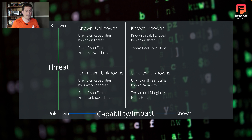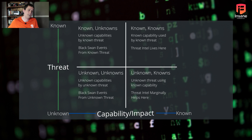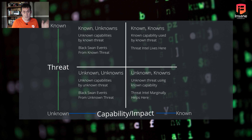Finally, unknown unknowns — unknown capabilities by unknown threats. This is a really hard one. This is one you luck into maybe by doing different analysis techniques. It's a category you're unlikely to find during a threat hunt, or that you find entirely by luck. Today, we're going to talk about black swan events. Black swan events exist when it's not a known known — it's in the margin of what we don't know that we're looking for in a threat hunt.